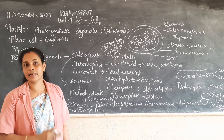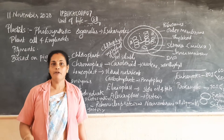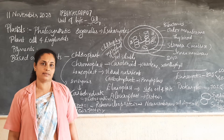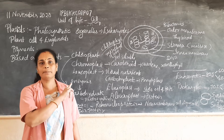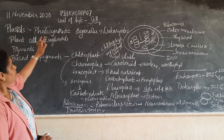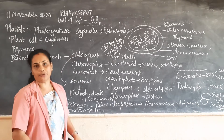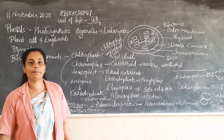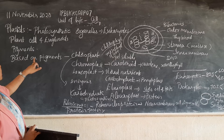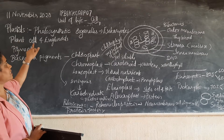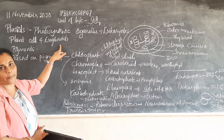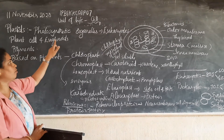Plastids are colored structures or cell organelles found in plant cells. That means they are found only in plant cells. Plastids are found in eukaryotic cells, mainly in plant cells - for example, where you can see the chloroplast.